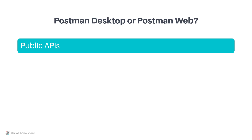First of all, it all depends upon which API you are going to test or work with. Note that APIs can generally be classified into three types: Public, Private, and Partner APIs. Public APIs are those available over the internet, whereas Private APIs are fully customized and available only within your network — it may be only for your product. Partner APIs are those exposed by partners whose APIs might be hosted on their premises.